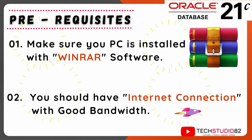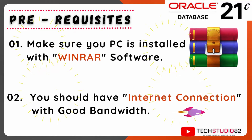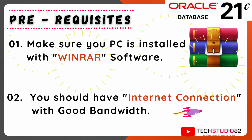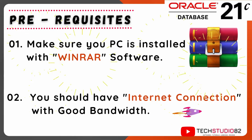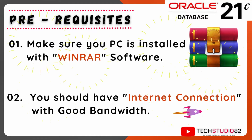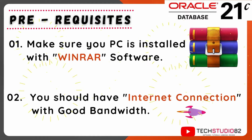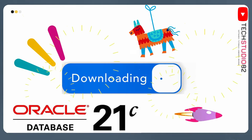Firstly, make sure your PC has WinRAR software installed. This software is required to extract the software zip files. Secondly, make sure you have an internet connection with good bandwidth in order to download the software file. Now let's move on to the first step, which is download.